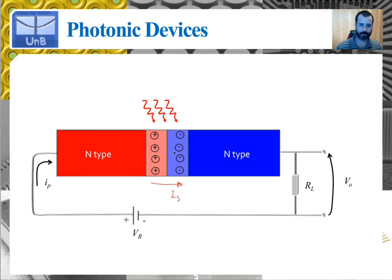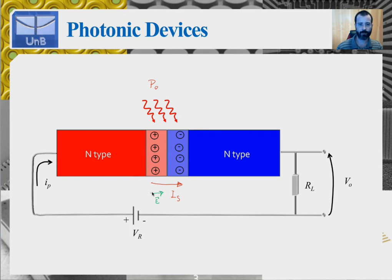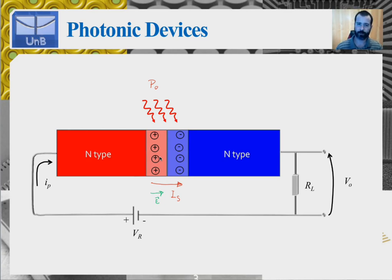If you illuminate the active region or the depletion region — shining light on this region with a given power or intensity — and if this light is at the appropriate frequency or wavelength, carriers will be generated in this region. Since there is an electric field here, the carriers generated inside this region will move due to the action of this electric field. Holes will move to the right and electrons will move to the left, and the reverse bias current will increase in proportion to the optical power impinging on the depletion region.